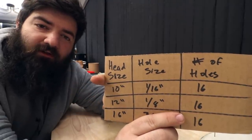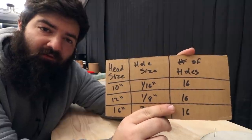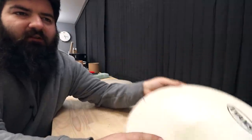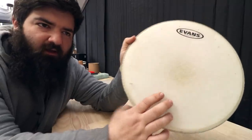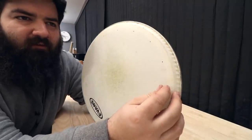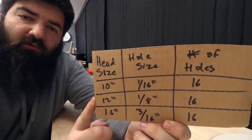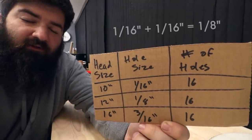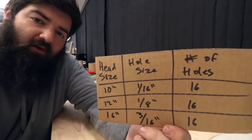For the 10-inch head, we're going to use a 16th of an inch hole, and we're going to do 16 total of those, which just so happens to be the size and number of the actual HD drive. This is a 16th of an inch drill bit, and it fits perfectly inside the holes. For the 12-inch, we'll go with an 8th of an inch hole, which is a 16th bigger than 1 16th. And again, we'll go with 16 holes.